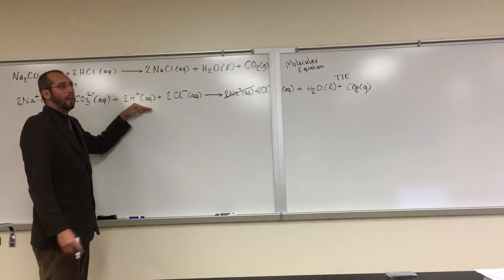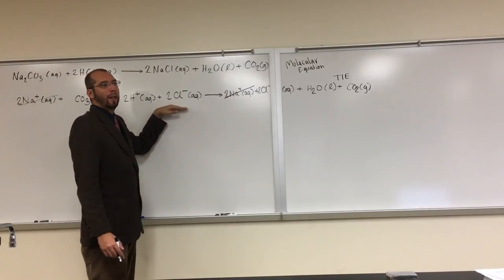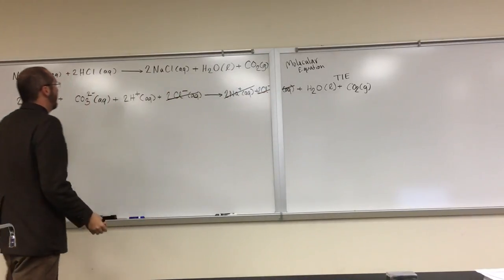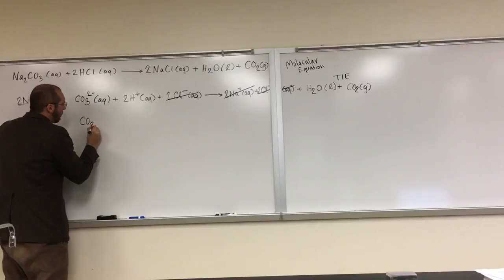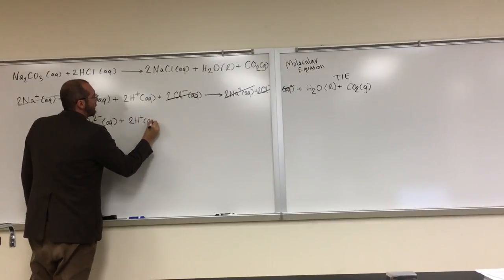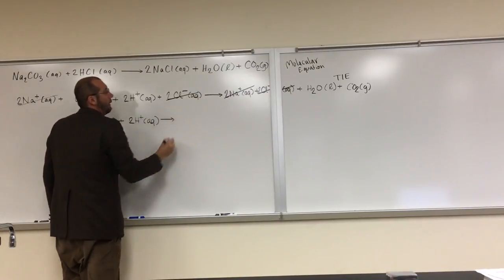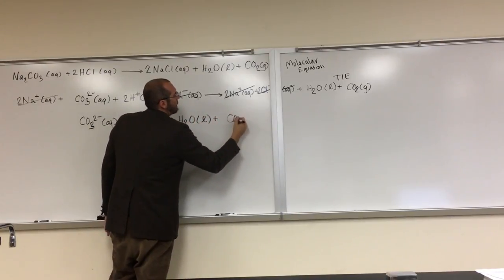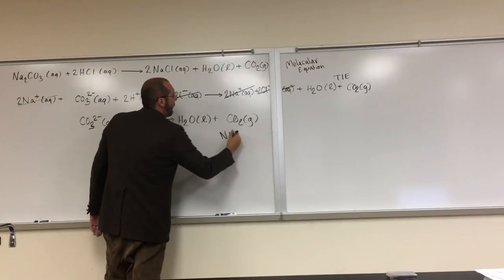H+ or 2H+, do we see that on the other side? No. Can we cancel it out? No. 2 Cl minuses? Yes. We can cancel those out. And there's our net ionic equation. We just bring everything down that we didn't cancel out. So what do we got? CO32- aqueous, plus 2H+ aqueous. And that's it from the reactant side. And what do we have over here? H2O liquid, plus what? CO2 gas. And that, we call the net ionic equation.